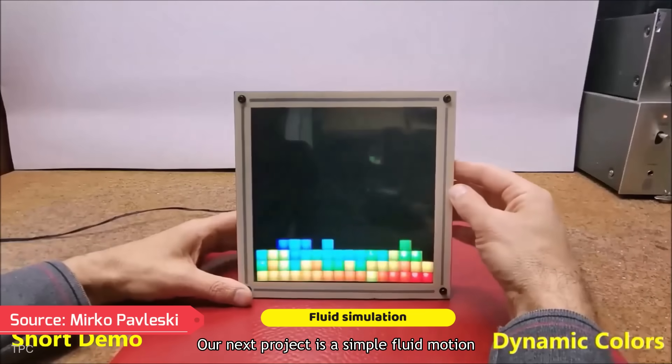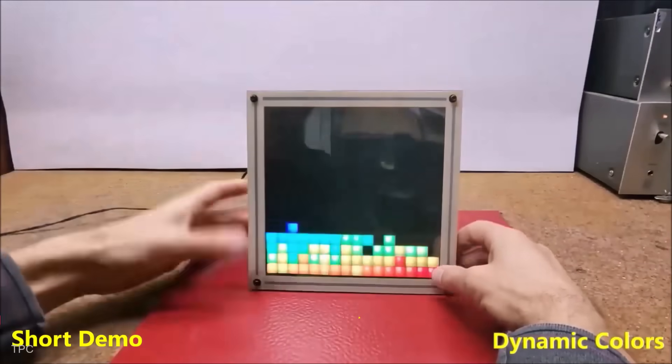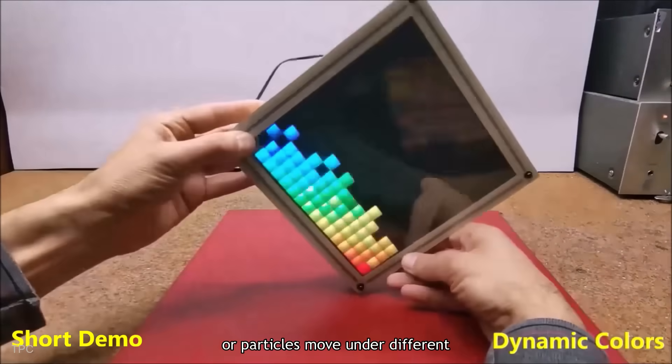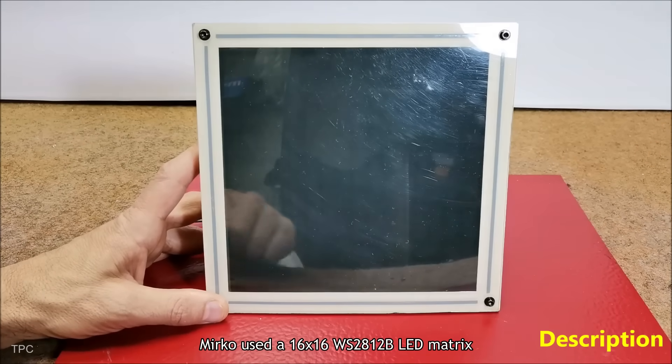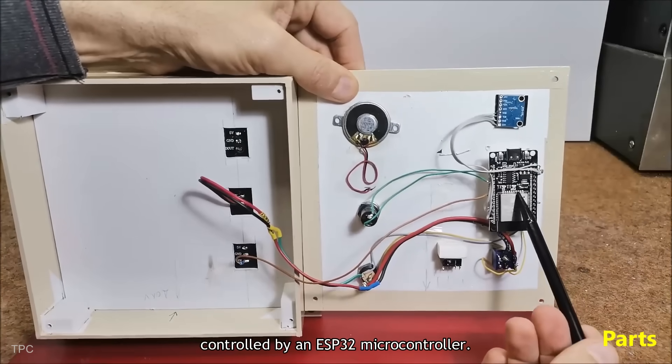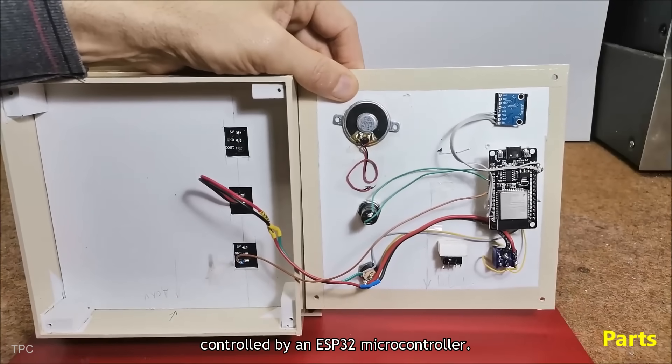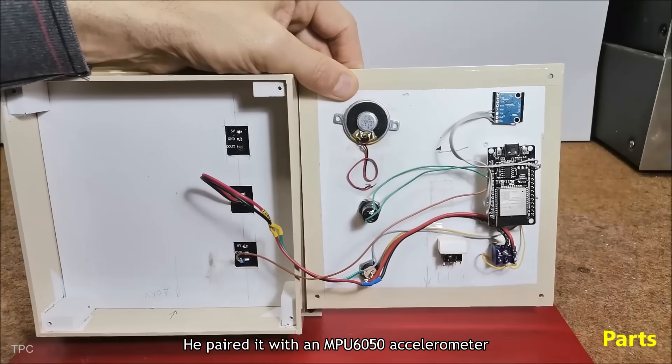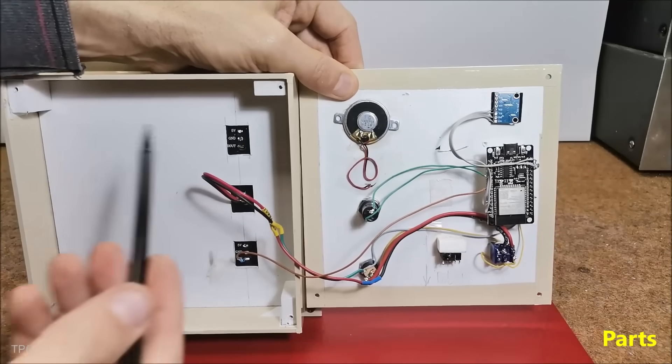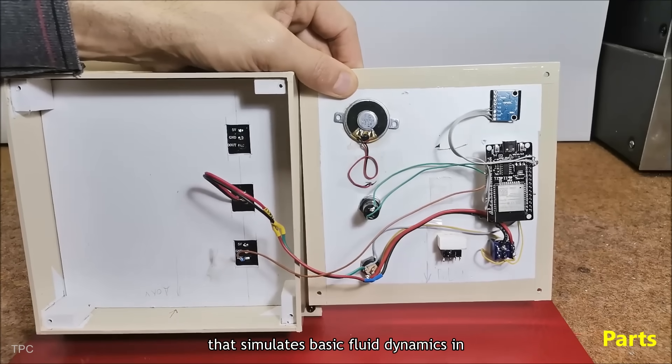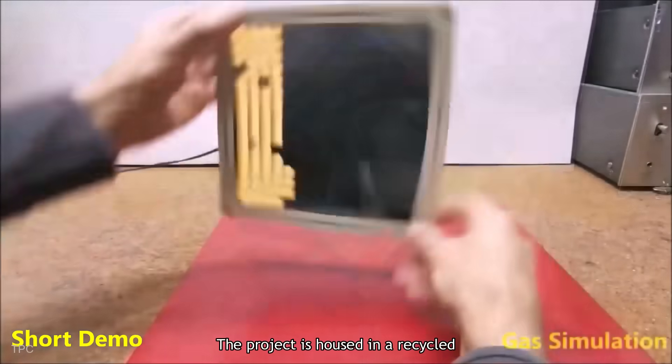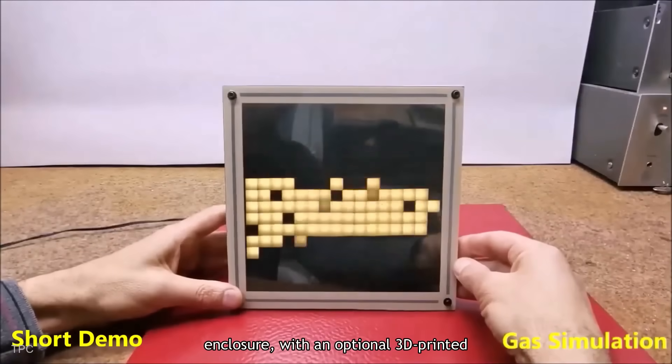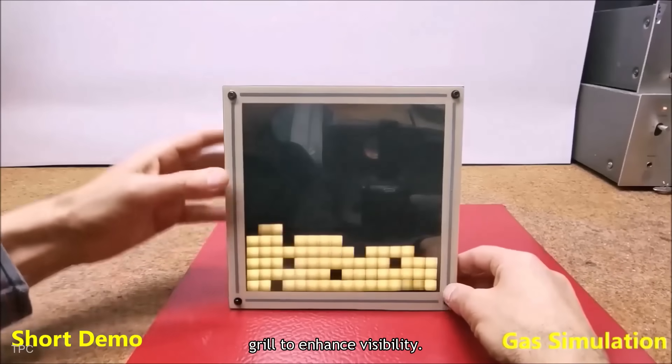Number 2. Our next project is a simple fluid motion simulator that visually demonstrates how liquids, gases, or particles move under different conditions. Here, Mirko used a 16x16 WS2812B LED matrix controlled by an ESP32 microcontroller. He paired it with an MPU 6050 accelerometer and a single button that simulates basic fluid dynamics in real-time, responding to device orientation and motion. The project is housed in a recycled enclosure, with an optional 3D-printed grill to enhance visibility.